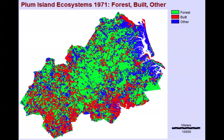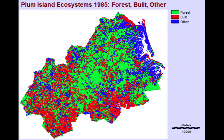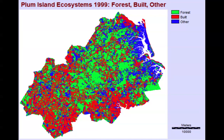This map represents one of three categorical land cover maps that we will be using for this demonstration. There are three categories of land cover: forest, built, and other. Our second map shows the same three categories but for 1985. We will use the period of 1971 to 1985 to calibrate our models. Our third map shows land cover within the Plum Island ecosystem in 1999. We will create models that predict land cover in 1999 using the calibration interval maps as well as driver variables.